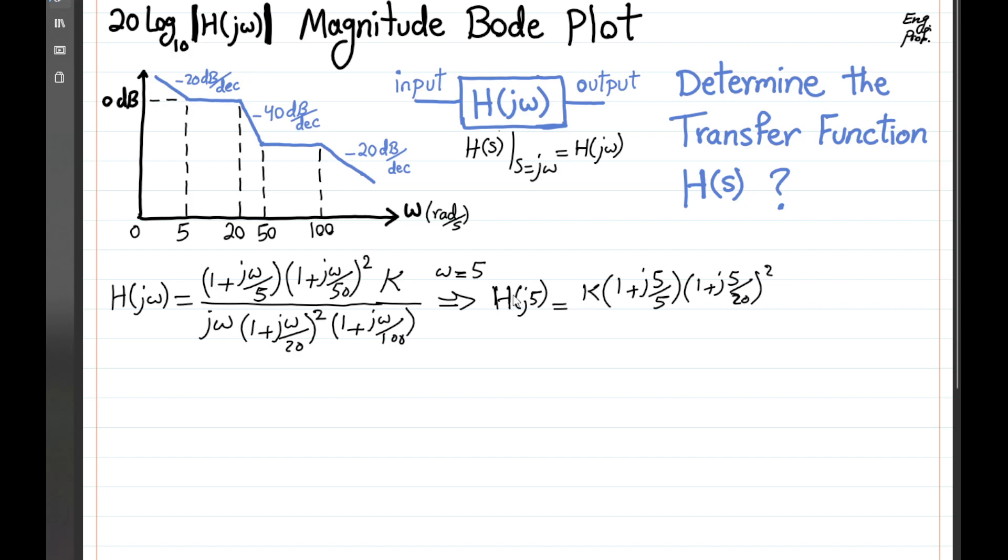And of course, we need the magnitude of h of j5, which means we need to compute the magnitude of this thing here. And then we have j5 and 1 plus j5 divided by 20 squared, and 1 plus j5 divided by 100.